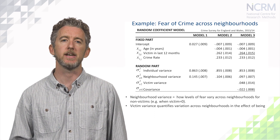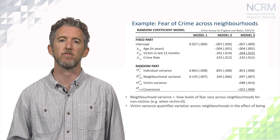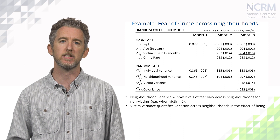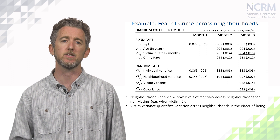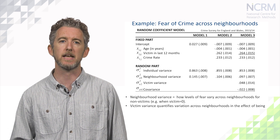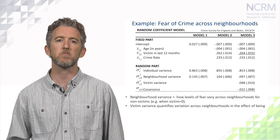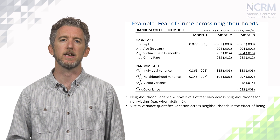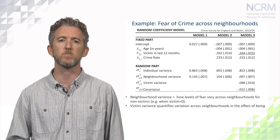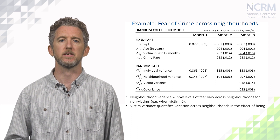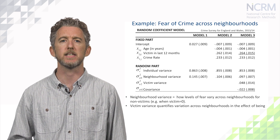We also identify a negative covariance term, which suggests that in areas where the intercept is higher than average, the gap between victims and non-victims will be smaller than average. A negative covariance means that positive intercept residuals tend to go with negative coefficient residuals. As the intercept refers to a non-victim, this means that in areas where non-victims tend to report more fear of crime, there are less notable differences between victims and non-victims — in other words, everyone is more fearful in these areas.